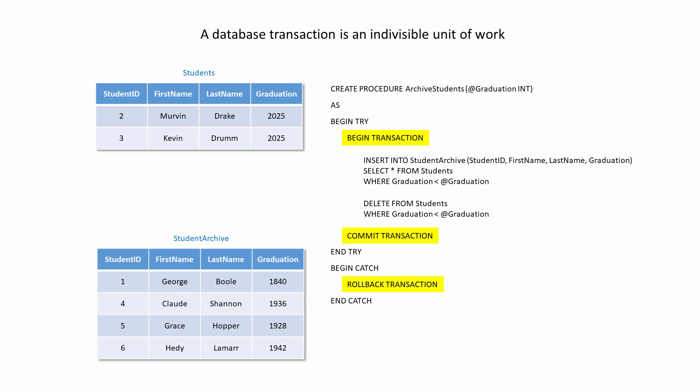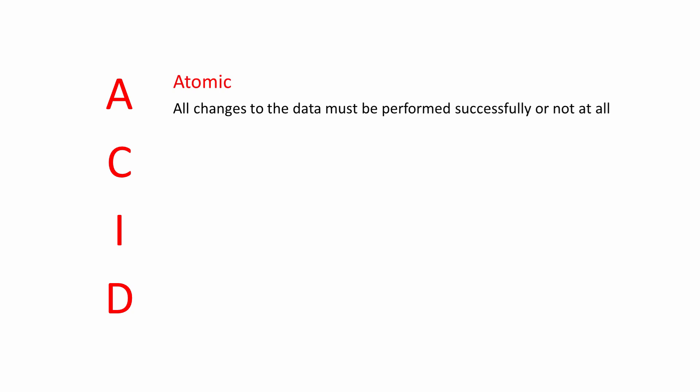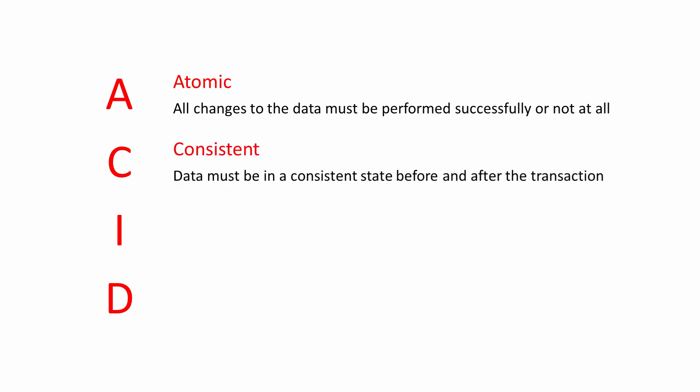The properties of database transactions are often described by the acronym ACID. A transaction must be atomic — this means that all of the changes made by the transaction must execute as a single unit; all changes to the data must be performed successfully, or not at all. A transaction must be consistent — data must be in a consistent or valid state before and after the transaction. Put simply, the transaction mustn't leave a mess behind. For example, if the intention is to move records from one table to another, the total number of records in both tables must remain the same. When money is transferred between two bank accounts, the total amount of money must be the same.